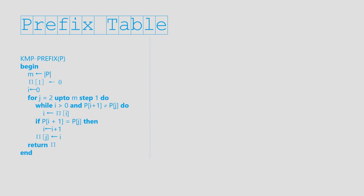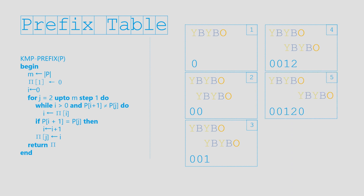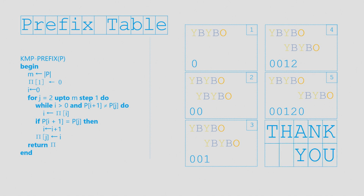The way we build the prefix table is exactly the same as how we wrote the main algorithm, only that we treat the pattern itself as both the pattern and the string. Given that the time complexity of the main algorithm is O(N), we can infer that the prefix algorithm would be O(M). Since M is usually much smaller than N, the overall complexity of the algorithm shall not overrun O(N). Thank you for watching this video lesson. I hope this has shown you how the KMP algorithm basically works. Please keep practicing string matching using the KMP algorithm until you fully understand it. Good luck!